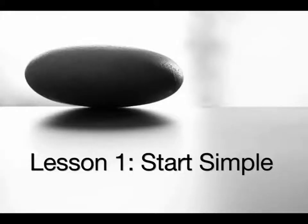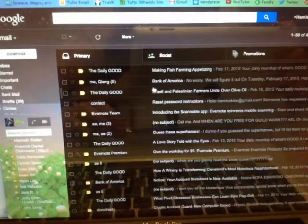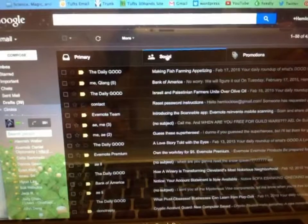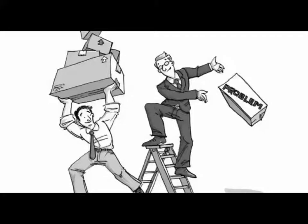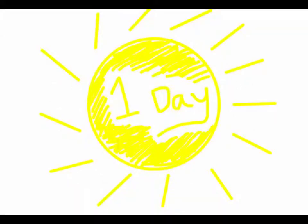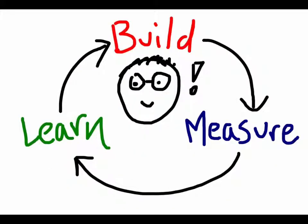Lesson one: start simple. Paul's overarching ambition was to create an awesome email program, but his first prototype started with solving one problem — searching emails. Essentially, Google for email. Even though the first prototype only performed this one function, his co-workers found it very useful, and it only took him one day to build. Starting simple by focusing on one problem allowed Paul to build, test, and validate his idea rapidly, providing a foundation for the next iteration.